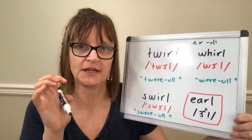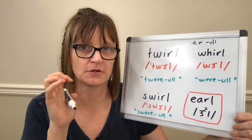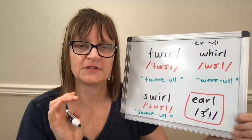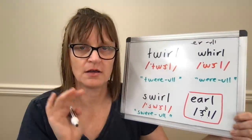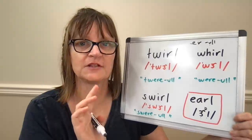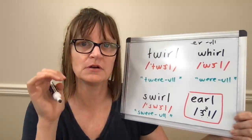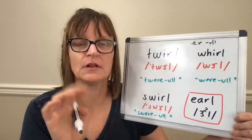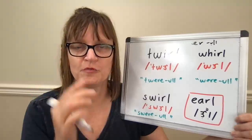So my tongue is in the tight back R position, ur, then it drops into the schwa while the front of the tongue lifts, so earl, earl, earl. But it's all one smooth movement between the two.